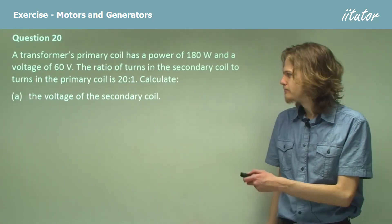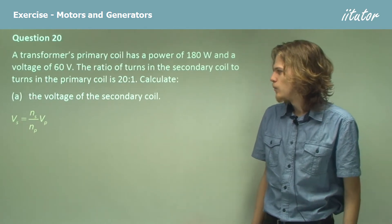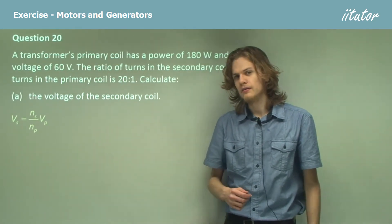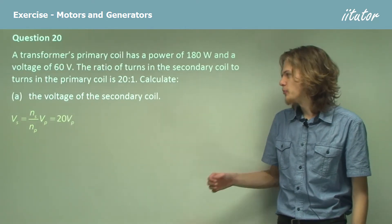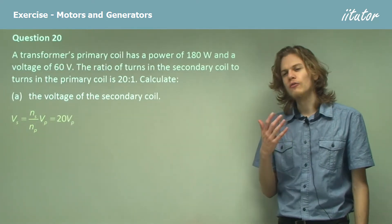So this should be fairly straightforward. We can use this equation for the secondary voltage, which will turn out, of course, to be just 20 times the voltage of the primary coil.